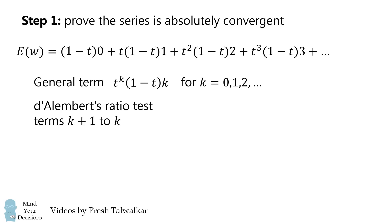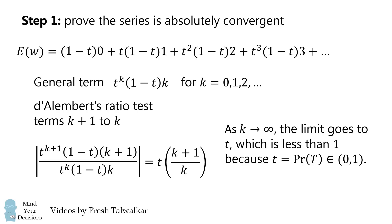Now, we'll use D'Alembert's ratio test of consecutive terms. We'll then simplify this, and we see what happens when K goes to infinity. This limit will go to T, and that's going to be less than 1, because T is the probability of getting a tails, which is strictly between 0 and 1. Thus, the series is absolutely convergent.